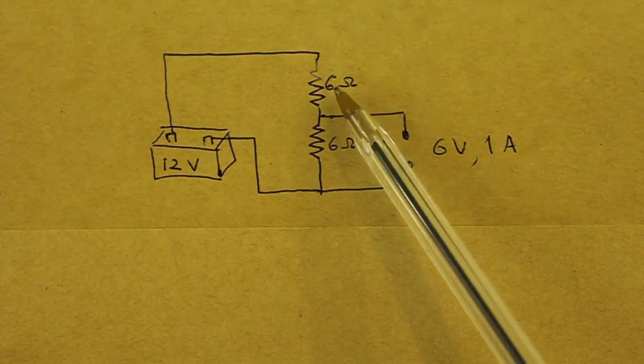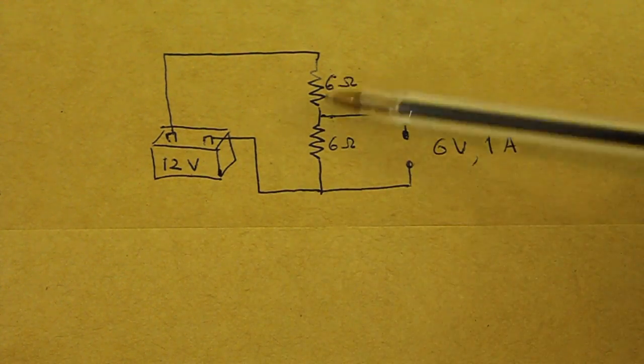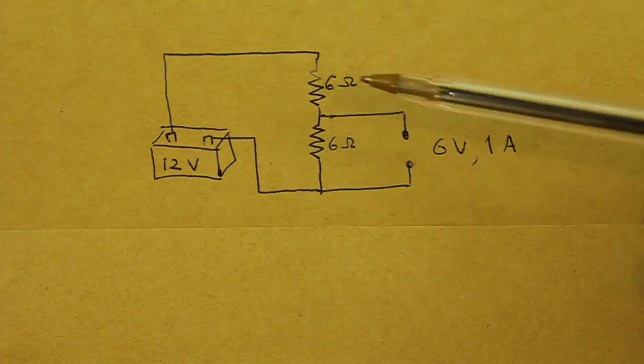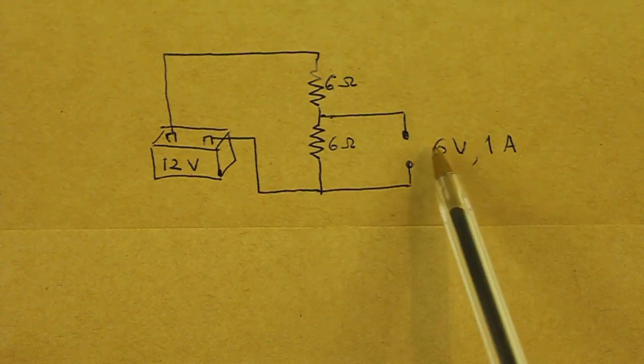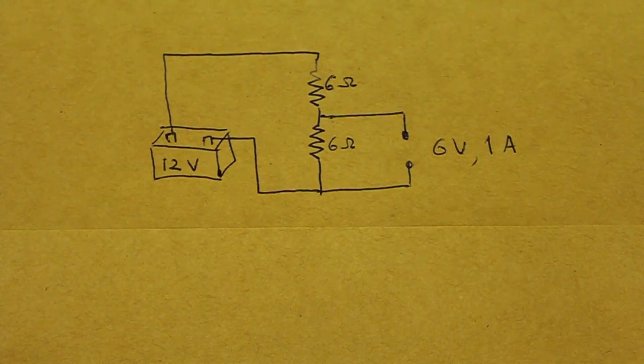And since the resistors are equal, the voltages will divide between them 6 volts and 6 volts. So at the output, we will have 6 volts at 1 amp, just what we need.